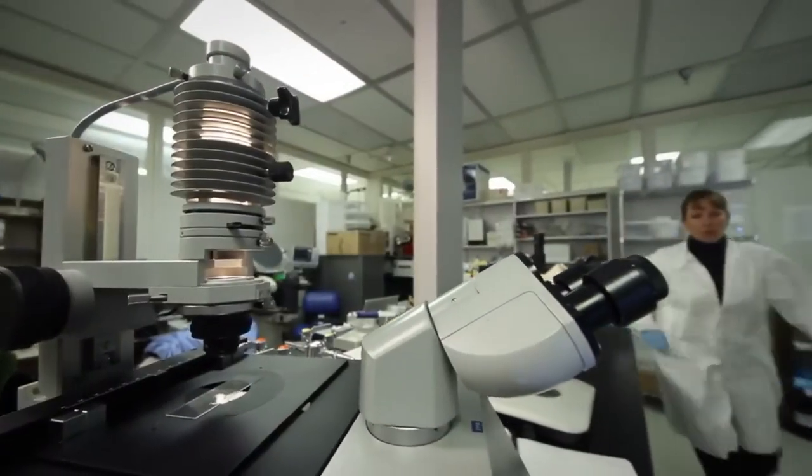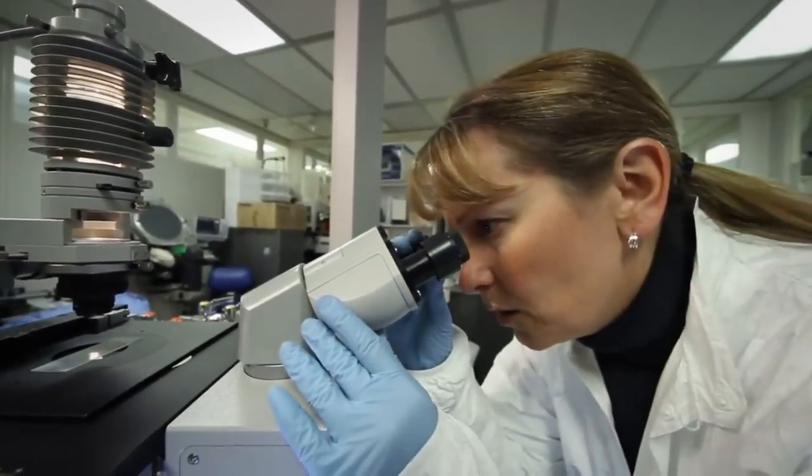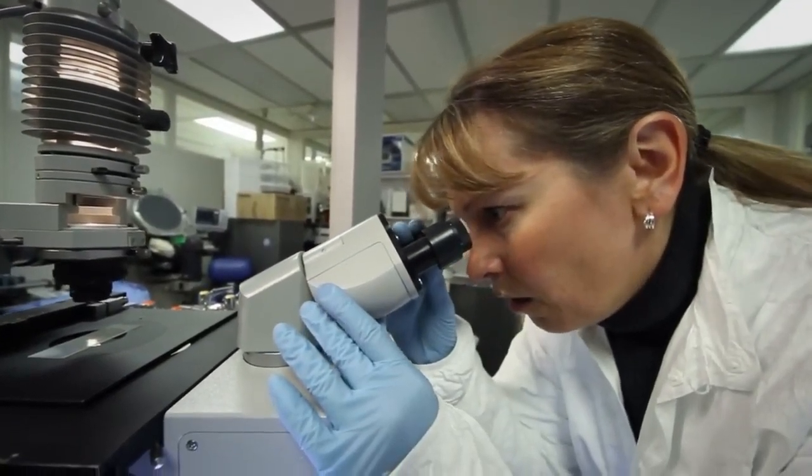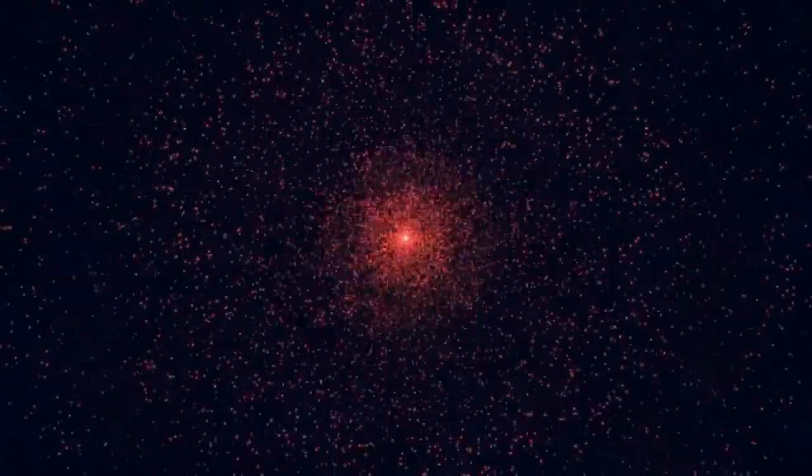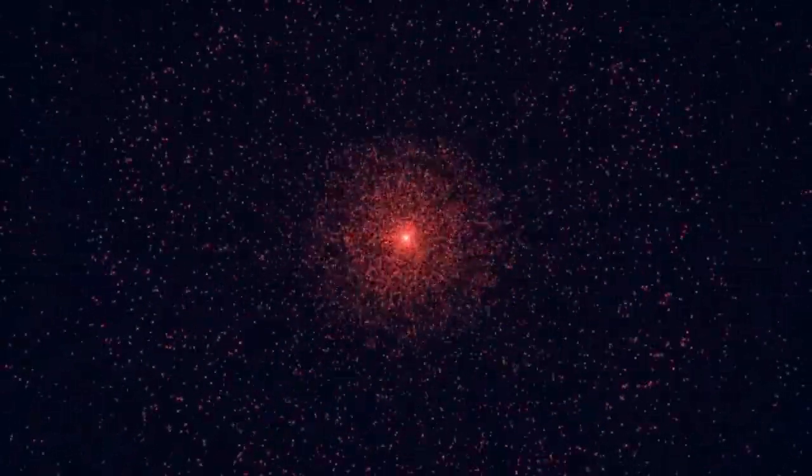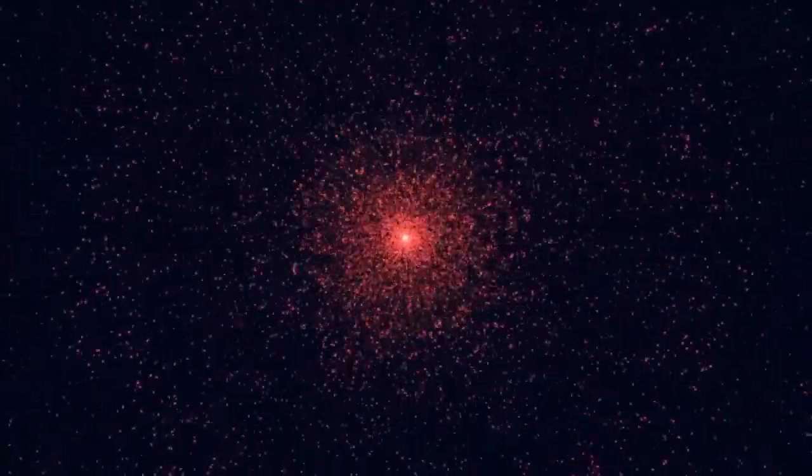Fortunately, Betelgeuse is far enough from Earth that even a powerful supernova wouldn't pose a threat to our planet. But if such an event were to happen closer to home, the results could be devastating. Gamma-ray bursts, sometimes linked with certain supernovae, could strip away Earth's ozone layer, leading to harmful levels of ultraviolet radiation.